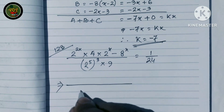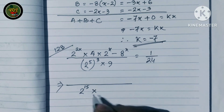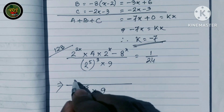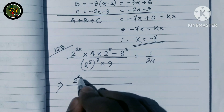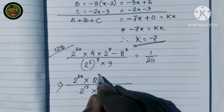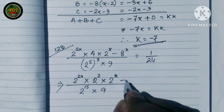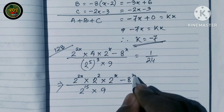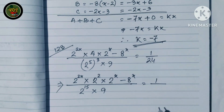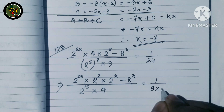The second step gives 2 to the power 5, 3, 15, raised to the power 15 or 9. The step is 2 to the power 2 times x, into 4, to the power 2 square x, and 2 to the power x equal to 1 by 24. Now, 1 by 24 equals 3 into 8.